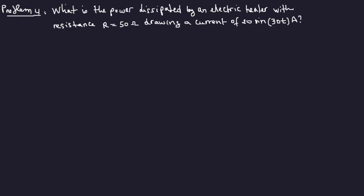What is the power dissipated by an electric heater with resistance R equals 50 ohms drawing a current of 20 sin 30t amps? So what's power? We're dealing, this is AC circuits, remember that.